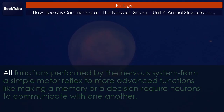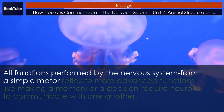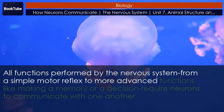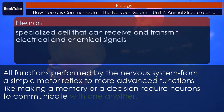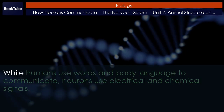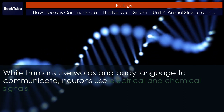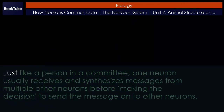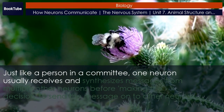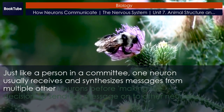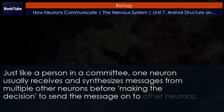How neurons communicate. All functions performed by the nervous system, from a simple motor reflex to more advanced functions like making a memory or a decision, require neurons to communicate with one another. While humans use words and body language to communicate, neurons use electrical and chemical signals. Just like a person in a committee, one neuron usually receives and synthesizes messages from multiple other neurons before making the decision to send the message on to other neurons.